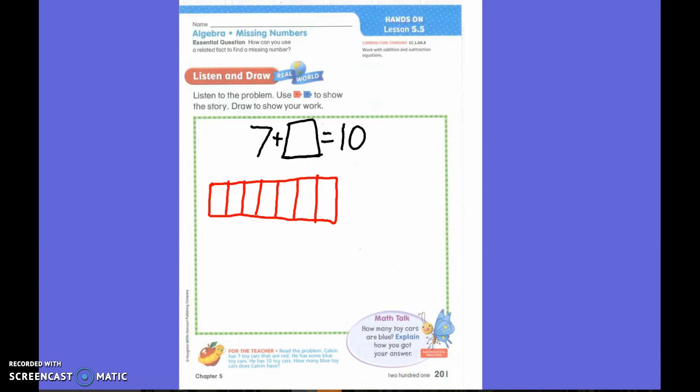And then we are going to draw more until I get to 10. So how many have I drawn already? Seven. So let's continue drawing with our blue crayon this time until I get to 10. Are you ready? Eight, nine, ten.